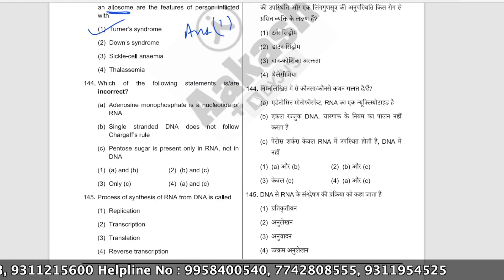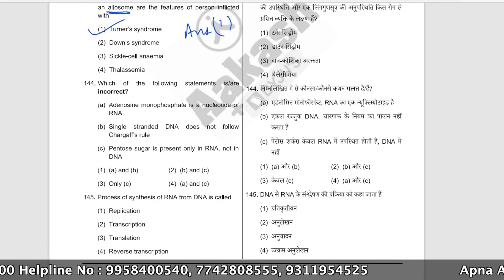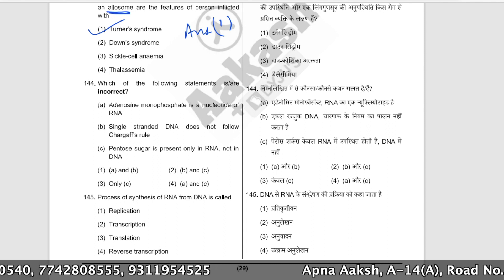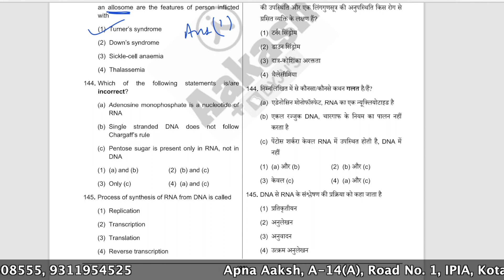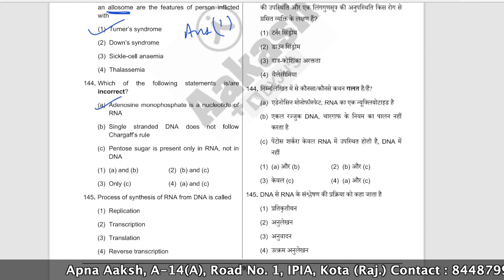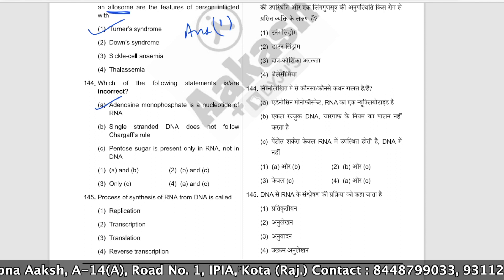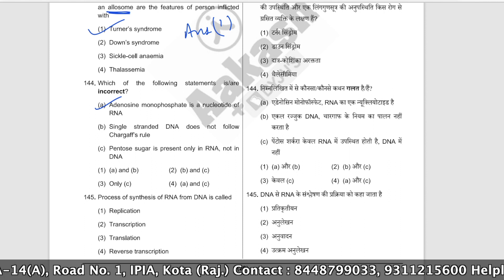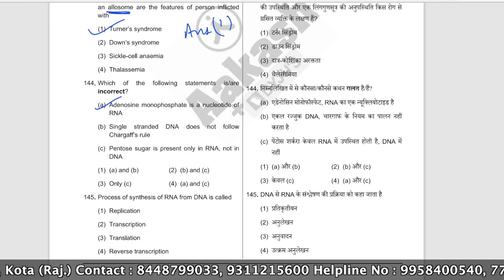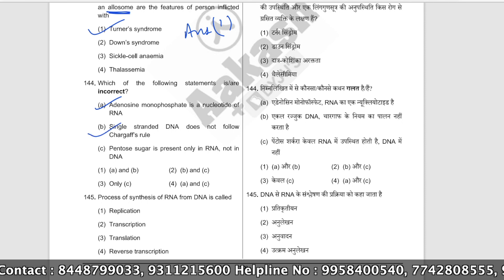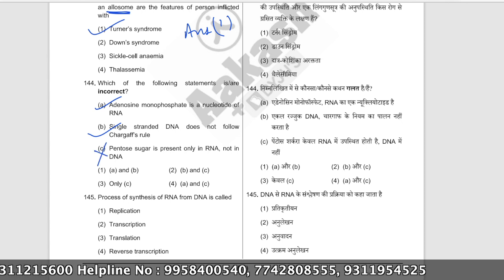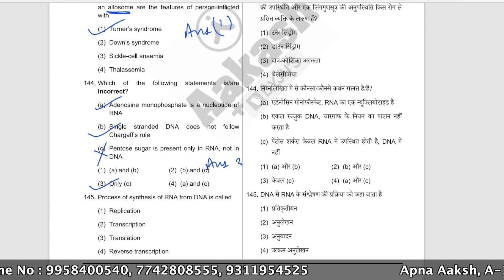Which of the following statements is incorrect? Adenosine monophosphate is a nucleotide of RNA — correct. Single-stranded DNA does not follow Chargaff's rule — correct. Pentose sugar is present only in RNA, not in DNA — this is incorrect, as pentose sugar is present in both DNA and RNA. Statement C is wrong. The correct answer is option number three.